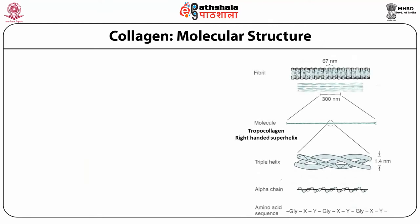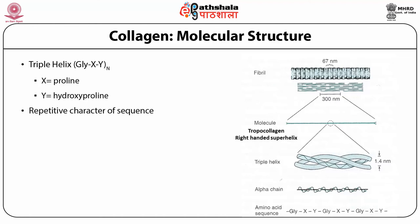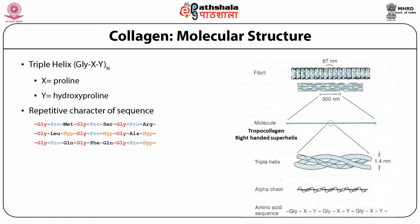One of the most important things in collagen molecular structure is the sequence of the triple helix. In this triple helix, the sequence is glycine-X-Y, where X can be proline and Y can be hydroxyproline. This triad sequence gets repeated — it can be glycine-proline-methionine or glycine-proline-serine.